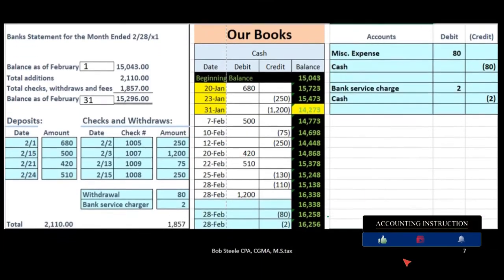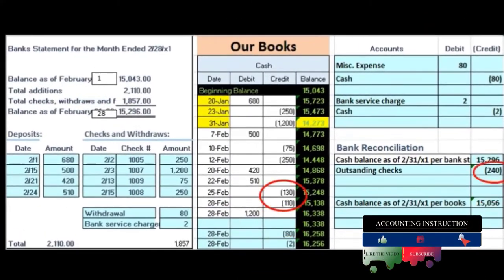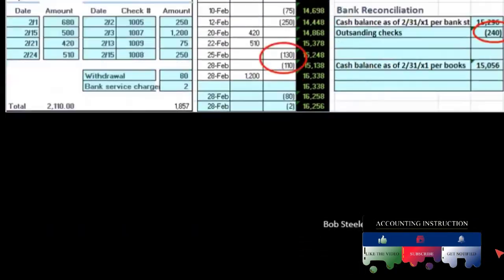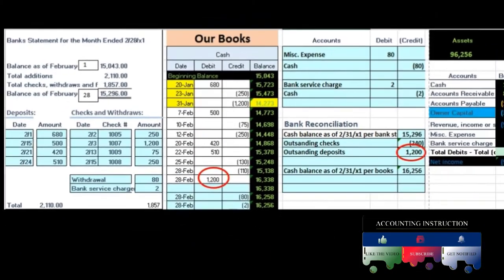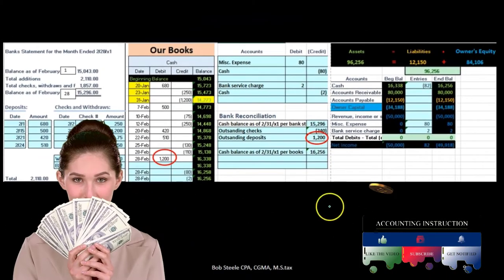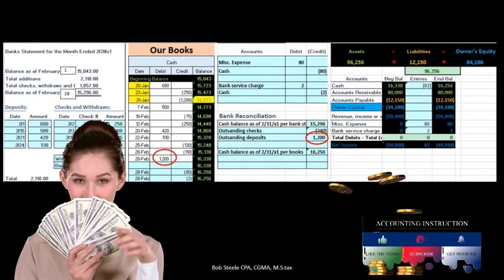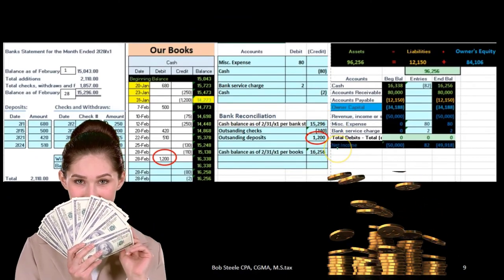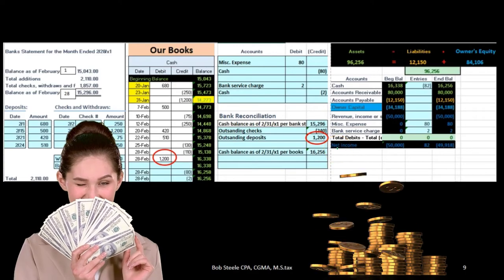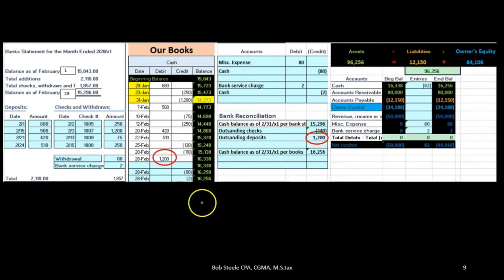Therefore, when we take a look at the bank reconciliation, we will have an adjustment for outstanding checks and an adjustment for that outstanding deposit as well. That will reconcile from the bank balance to our book balance, including that deposit as a reconciling item.